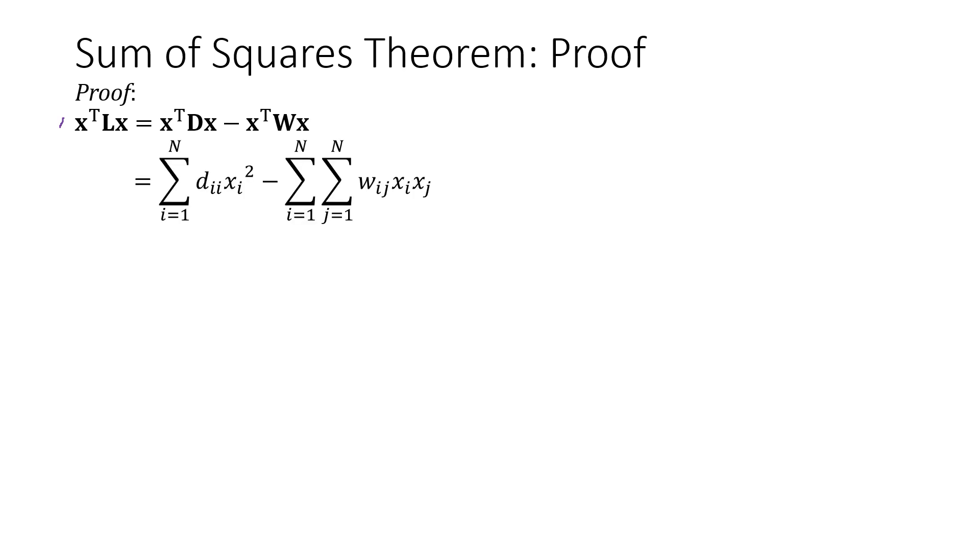And noting that D is a diagonal matrix with elements dii, we can replace this first term with this single summation here. Now W is not a diagonal matrix, but it's symmetric. And so x transpose Wx can be replaced with this double summation here.